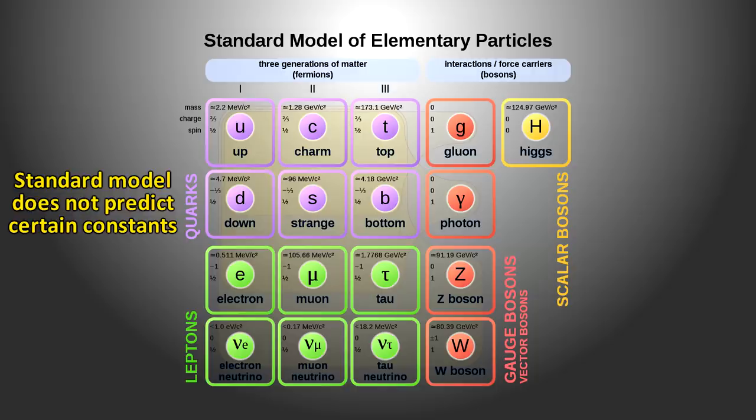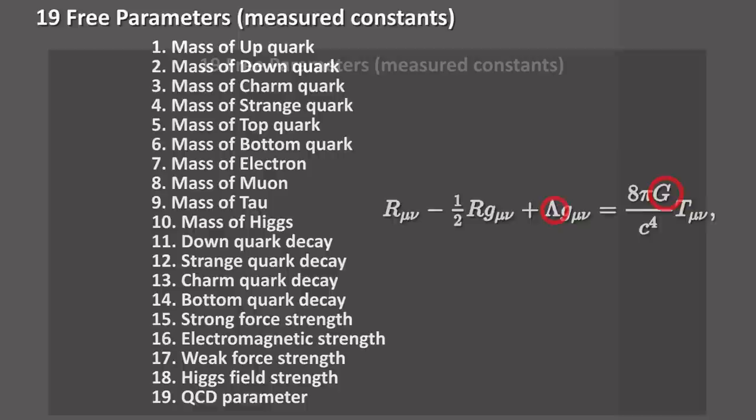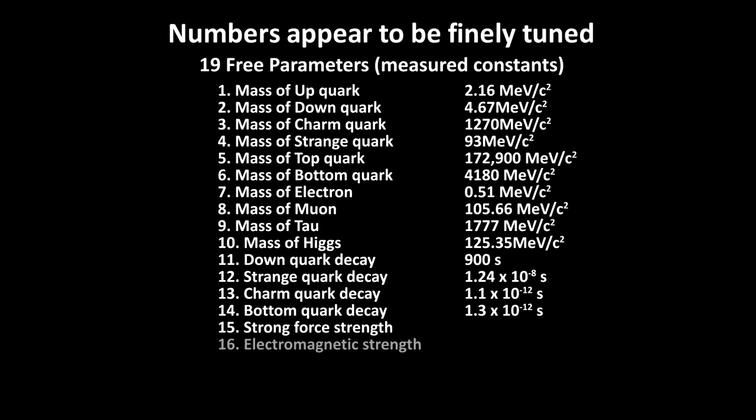The standard model of particle physics and general relativity is spectacularly accurate. But there are constants in these equations that do not have an explanation. They have to be measured and appear to be just properties of the universe. And it so happens that many of these constants are finely tuned. That is to say, if you change them slightly in either direction, positively or negatively, it could lead to a completely different universe with no life at all.